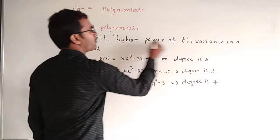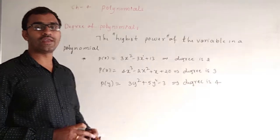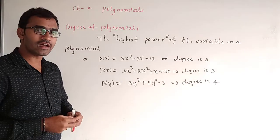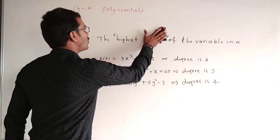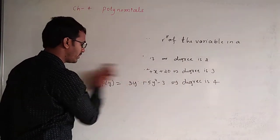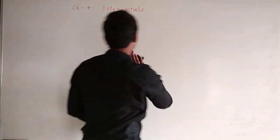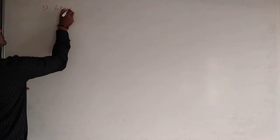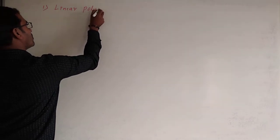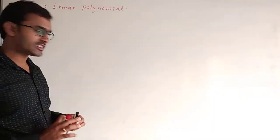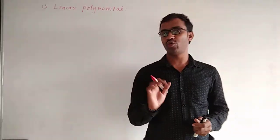The highest power of the variable in a polynomial is called the degree of the polynomial. Based on the degree of polynomial, there are some standard types: linear, quadratic, and cubic polynomial.